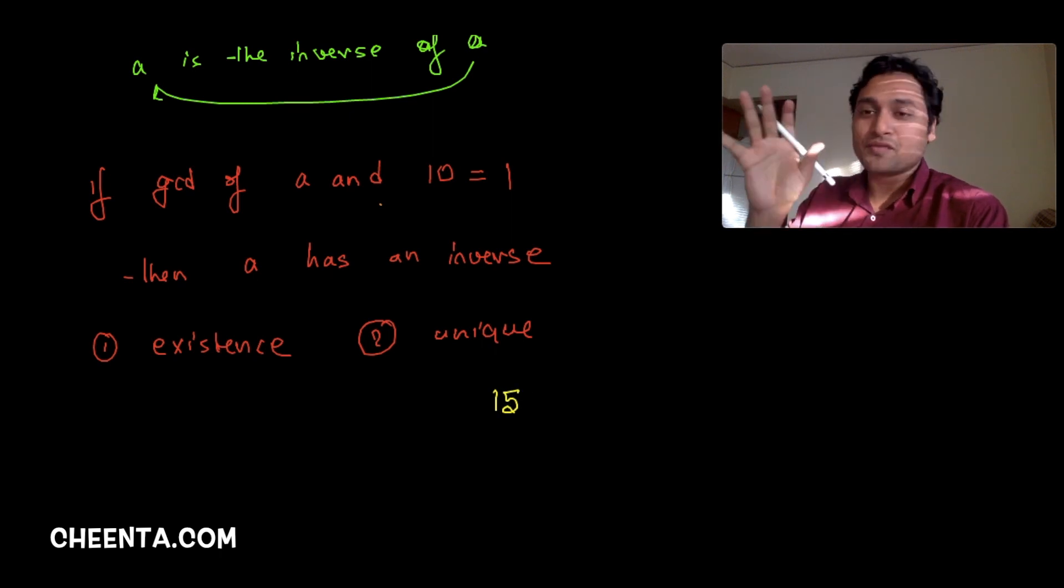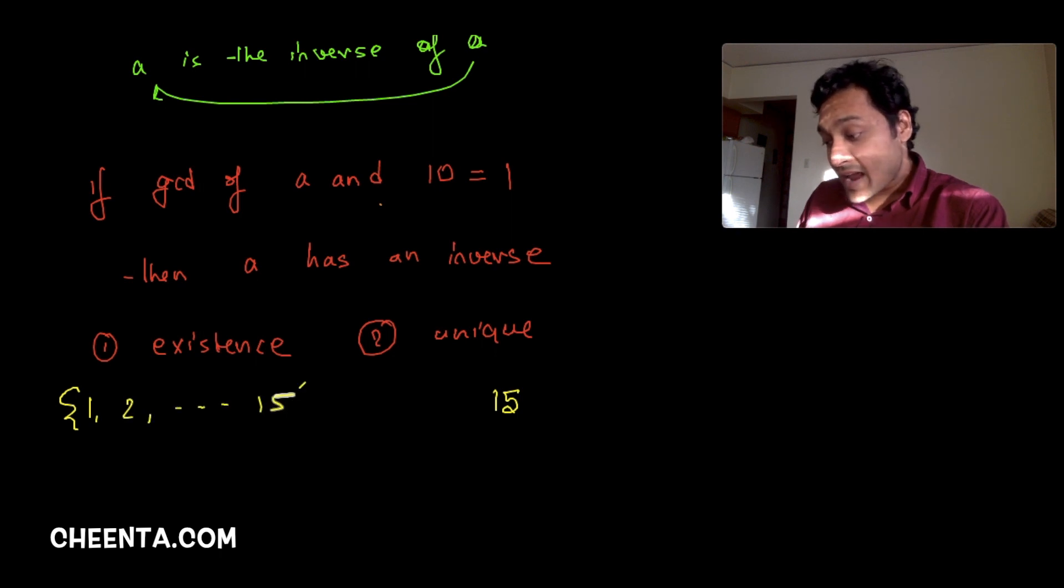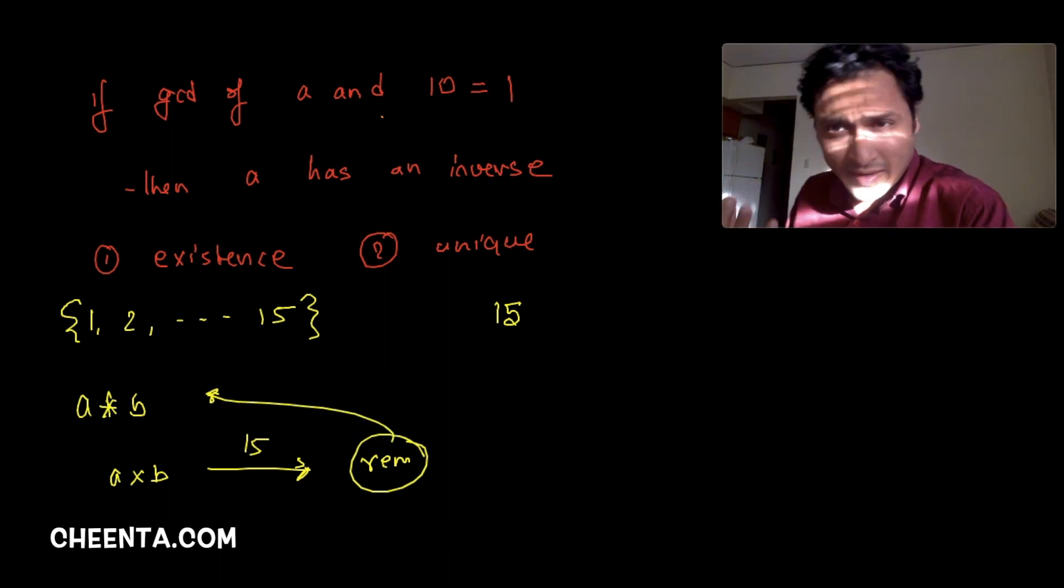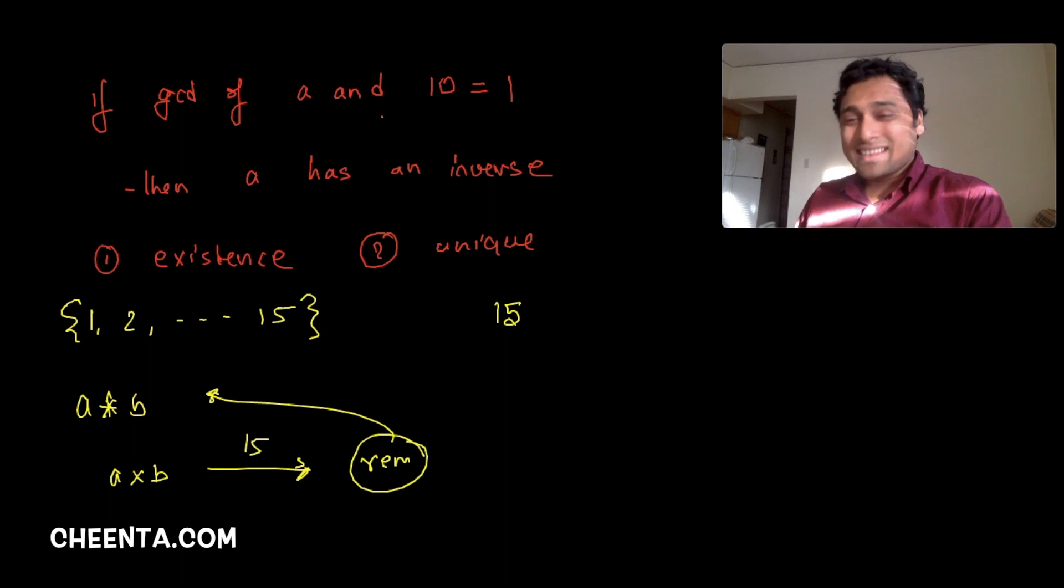Let's do one quickly. Suppose let's take the number 15, that's our base number instead of 10. Now we are considering the numbers from 1 to 15 and our operation would be the following: we will multiply the numbers first, and then they will be divided by 15. Whatever the remainder is, that would be the final result of the operation.